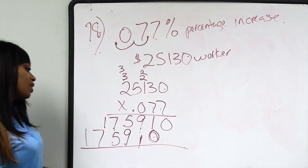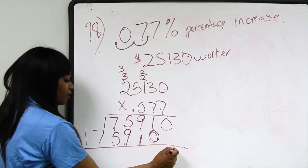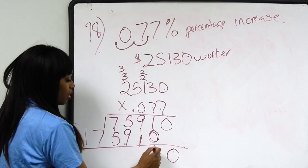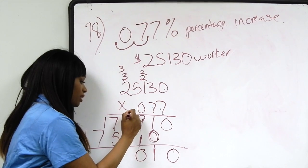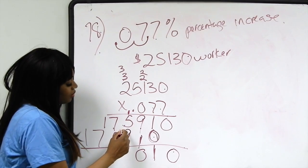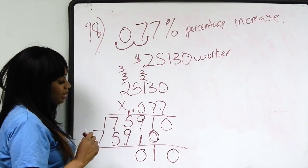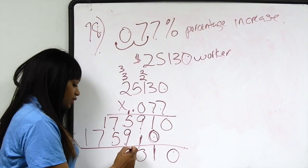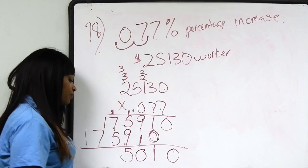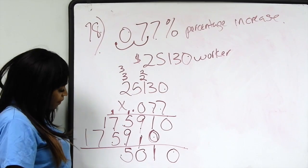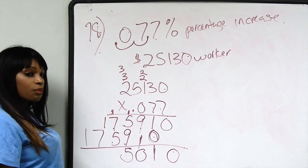We're going to add straight down. 0 plus nothing is 0. 1 plus 0 is 1. 9 plus 1 is 10. So we're going to bring down the 0 and carry the 1 one place over to the left. 9 plus 5 is 14, plus 1 more is 15. We're going to bring down the 5 and carry the 1 one place over to the left.